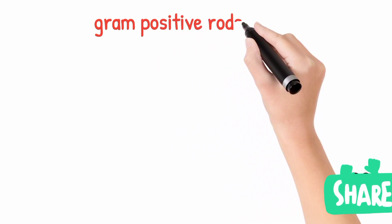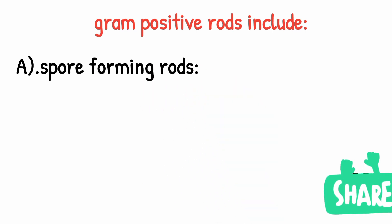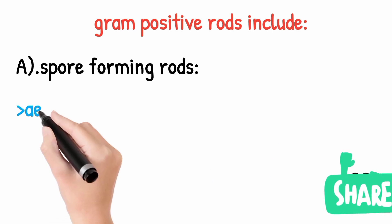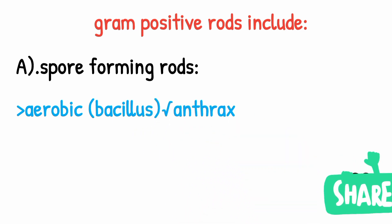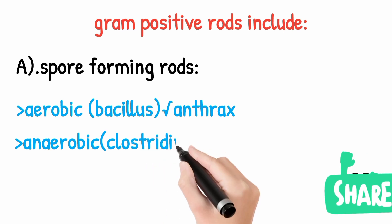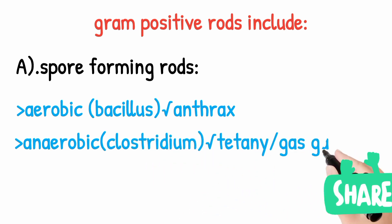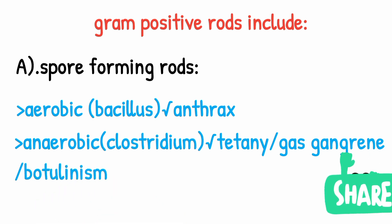Gram positive rods can be categorized into spore-forming and non-spore-forming rods. Spore-forming rods form spores, which are resistant structures, and are further divided into aerobic and anaerobic. The aerobic example is Bacillus, which causes anthrax. The anaerobic representative organism is Clostridium, which causes tetanus, gas gangrene, and botulism.